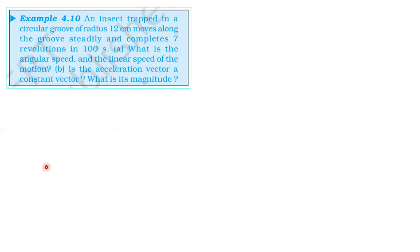Next question is example 4.10. An insect trapped in a circular groove of radius 12 cm moves along the groove steadily and completes 7 revolutions in 100 seconds. What is the angular speed and the linear speed of the motion?